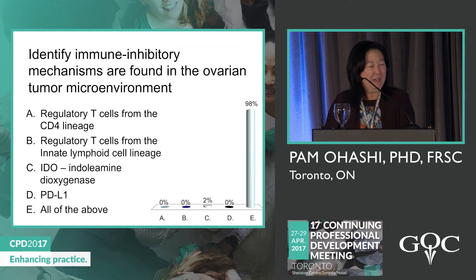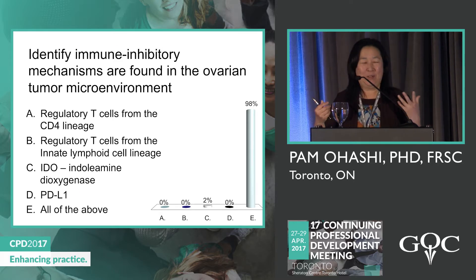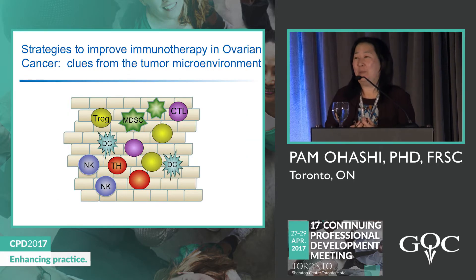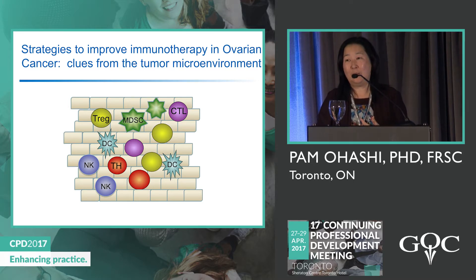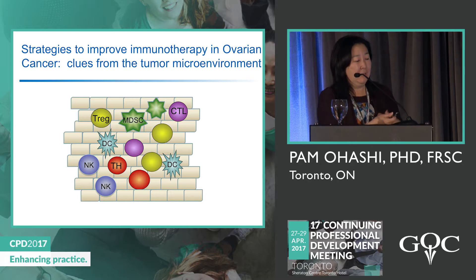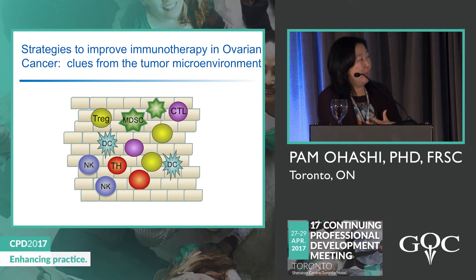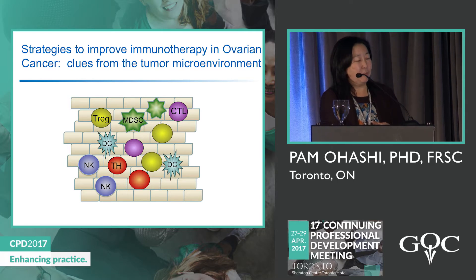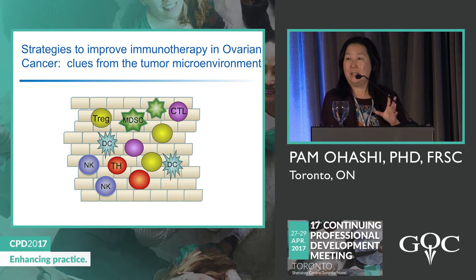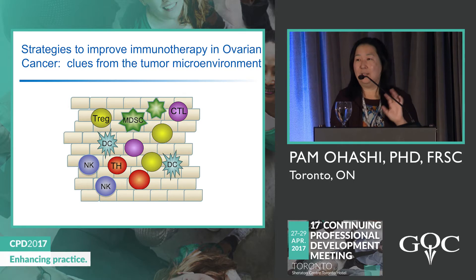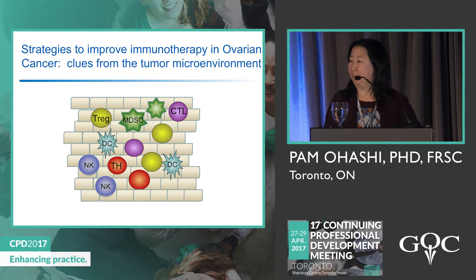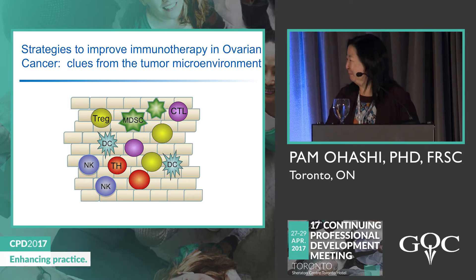In summary, for ovarian cancer over the next few years, we want to develop combination therapies targeting PD1/PDL1 blockade combined with shutting down myeloid-derived suppressor cells, shutting down IDO, shutting down T-regs, and figuring out what to do with NK cells.